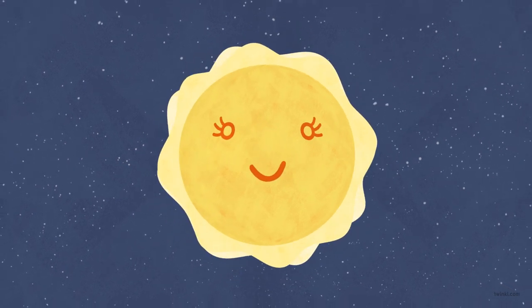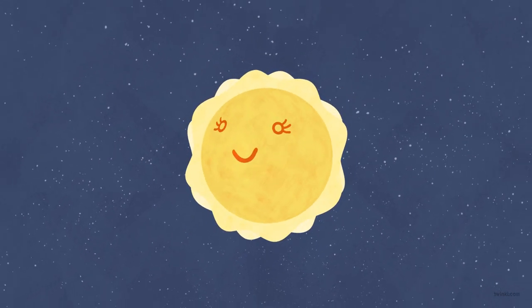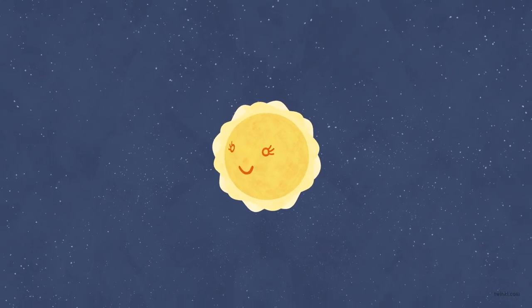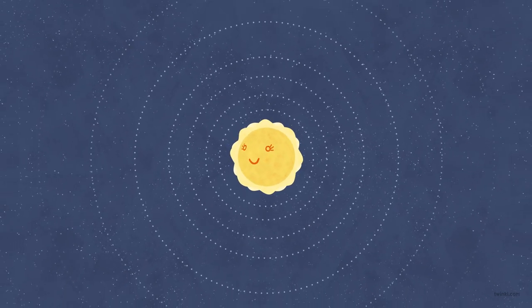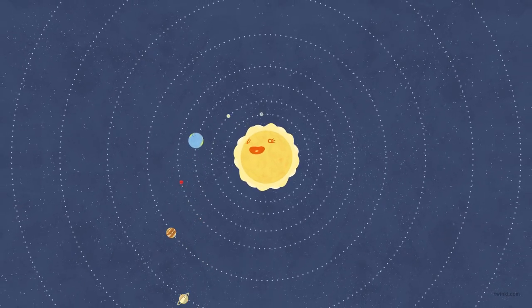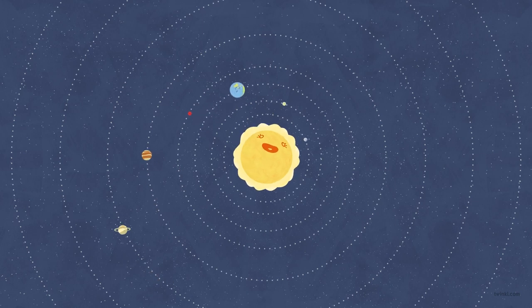...called the Sun, and it is a ball of hot gas. It gives out heat and light. It is the gravity of the Sun which keeps the planets orbiting around it. There are eight planets orbiting the Sun at different speeds.